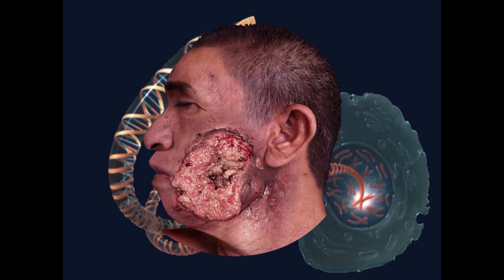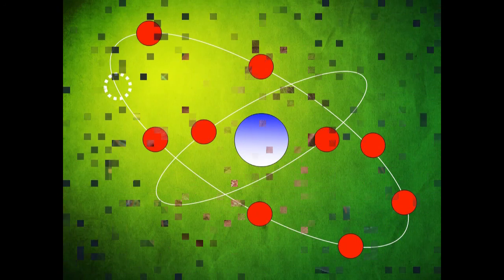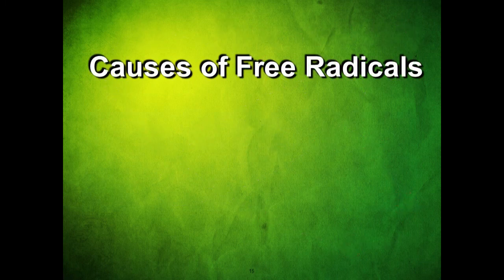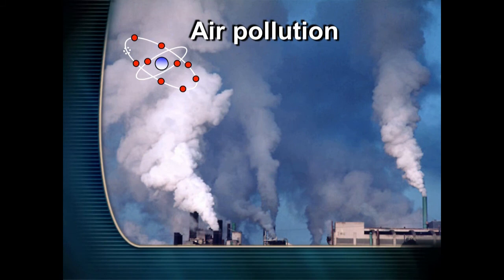DNA can be mutated by what's called a free radical. What's wrong with a free radical atom? It's missing an electron. When it's missing an electron, it steals one from its neighbor, and keeps stealing until it gets down to the DNA — then you have a mutation. Sources of free radicals include pollution, cigarette smoke, and high-fat diet.